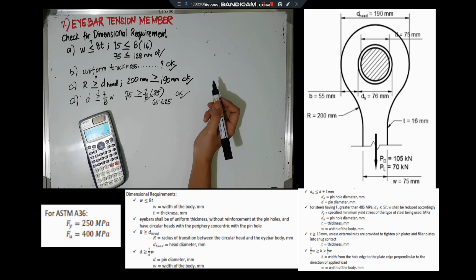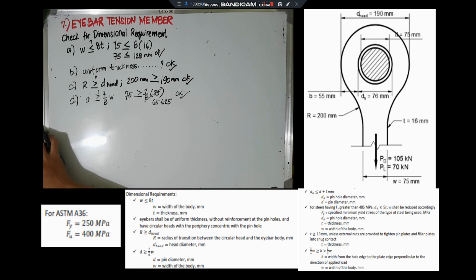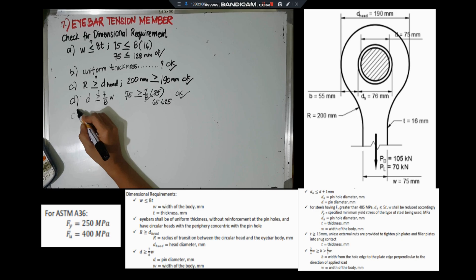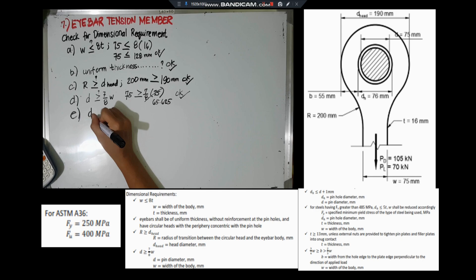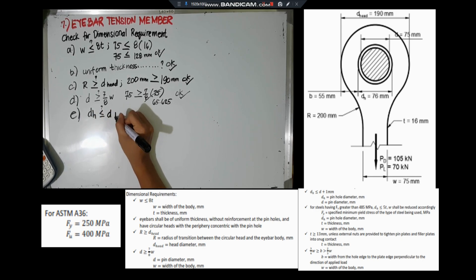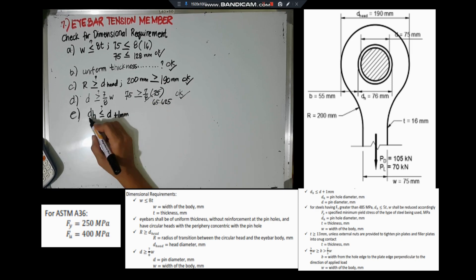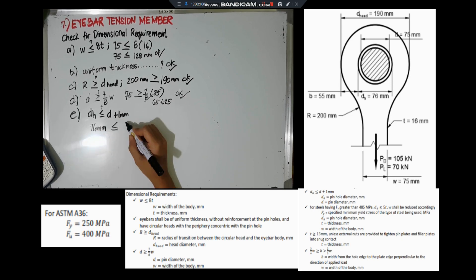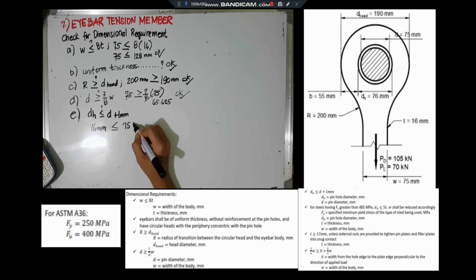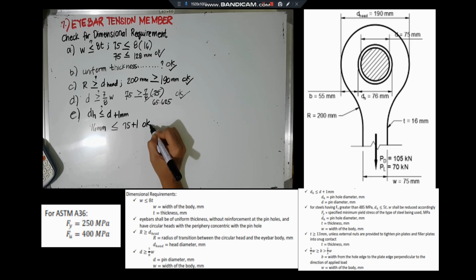Upon checking all dimensional requirements, we can now proceed. For the next requirement, the pinhole diameter must be less than or equal to the pin diameter plus 1mm. Our pin diameter is 75mm plus 1, so 76mm. That is fine.